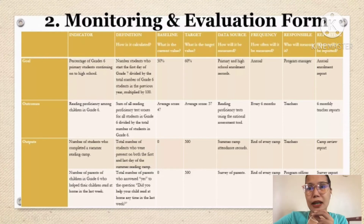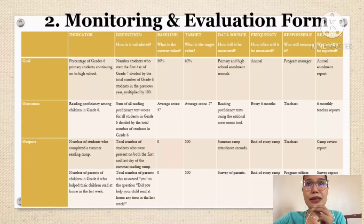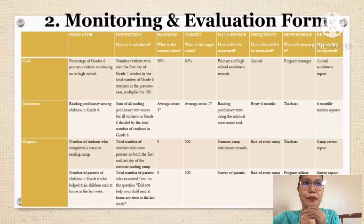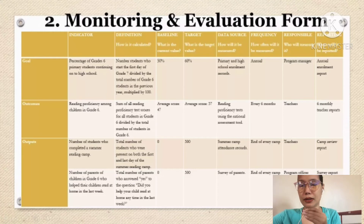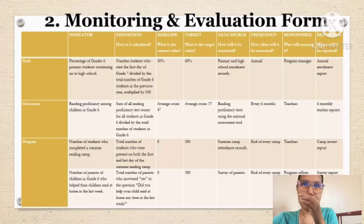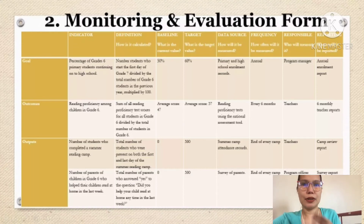Frequency — supposedly, para ma-monitor yung reading proficiency ng mga students, kung gaano kadalas ime-measure ito. Annual, at least once a week, or once a month. Pwede din sa reading proficiency test using the National Assessment Tool every six months para talaga makita yung pagkakaiba ng before and after nila. And then end of every camp — after ng naisip kong activity, i-measure kung may pagbabago po ba sila sa kanilang pagbabasa o wala.